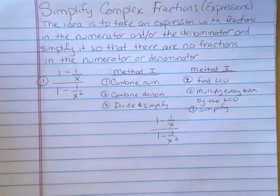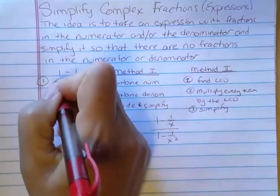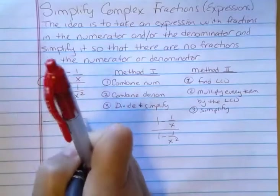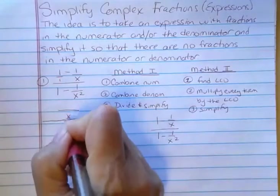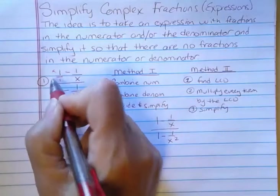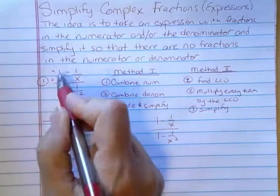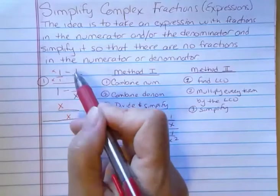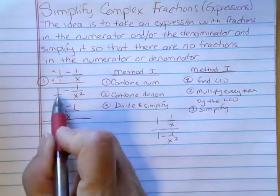To combine the numerators, we need to subtract 1 minus 1 over x. The least common denominator for that is x. I'm going to rewrite this problem so that instead of having two fractions, I'm going to have one. The least common denominator is x. The first one doesn't have an x, so we need to multiply the top and the bottom by x. That gives us x on the bottom and x on the top. The second one already has the x, so we don't have to change that — we have the x on the bottom, so we have minus 1. We just combine the numerator into one fraction. I'm going to do the same thing to the bottom, and I can see that in the denominator, the LCD would be x squared.